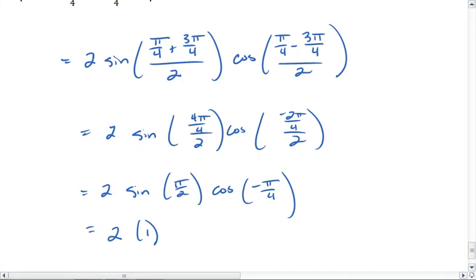That value is for cosine root 2 over 2, get this times root 2 over 2, multiply through, and I just end up with root 2, that's my final answer.